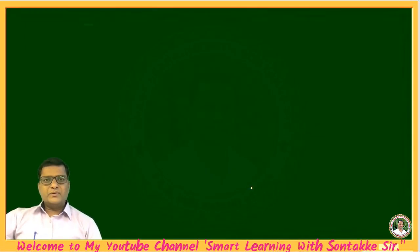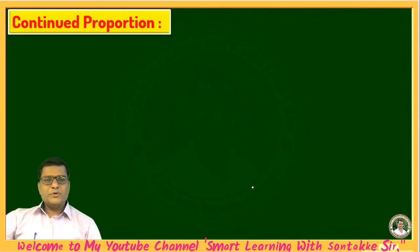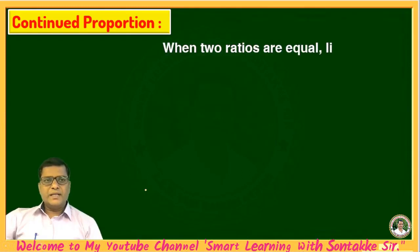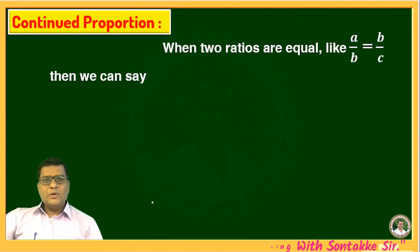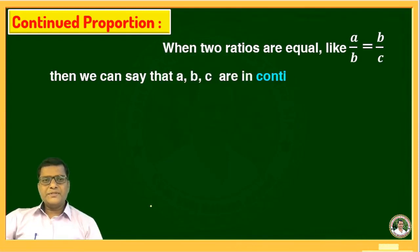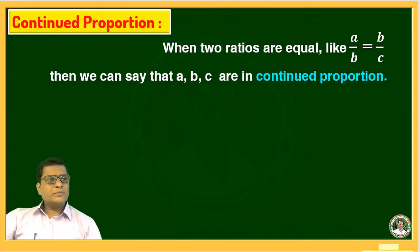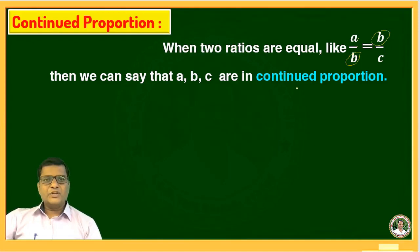Now we will see continued proportion. When two ratios are equal, like A upon B is equal to B upon C, then we can say that A, B, C are in continued proportion. Here in continued proportion, the denominator of the first ratio is the numerator of the other ratio. If both are equal then A, B, C are in continued proportion.